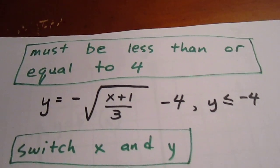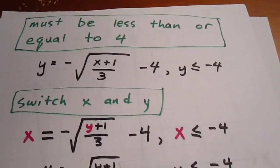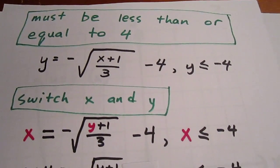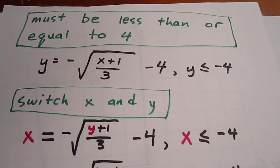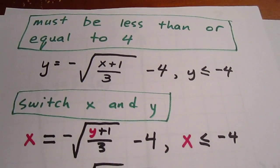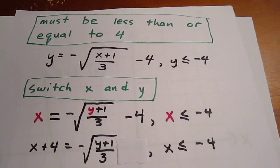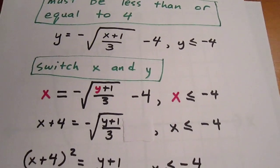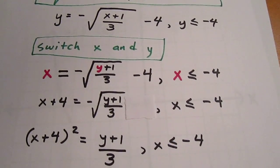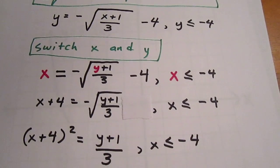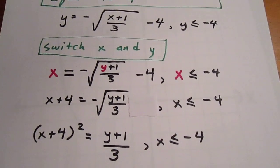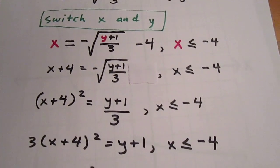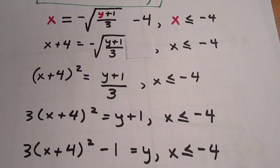We can then switch the x and the y values. We have two y's there and one x, and so we switch them and we have two x's and one y. We then can add 4 to both sides and square both sides. After we square both sides, we can multiply both sides by 3 and subtract 1.